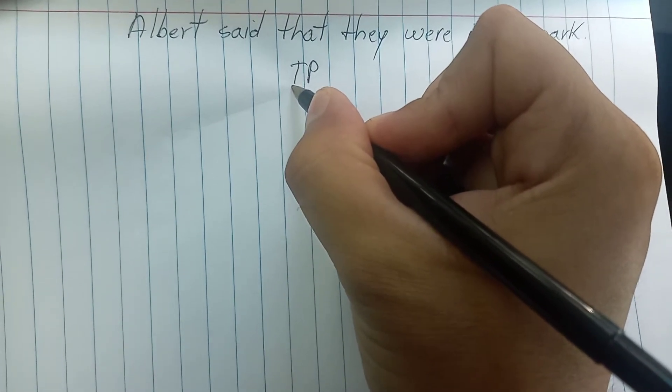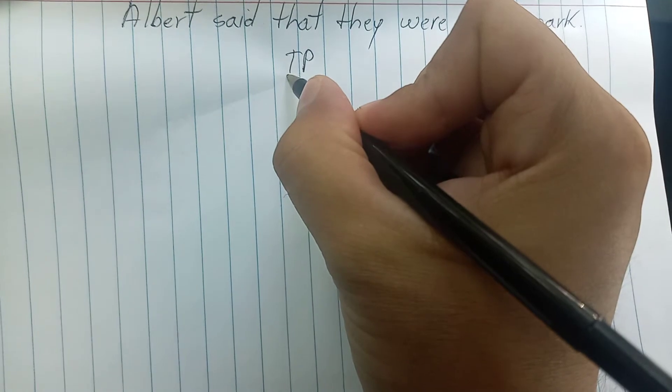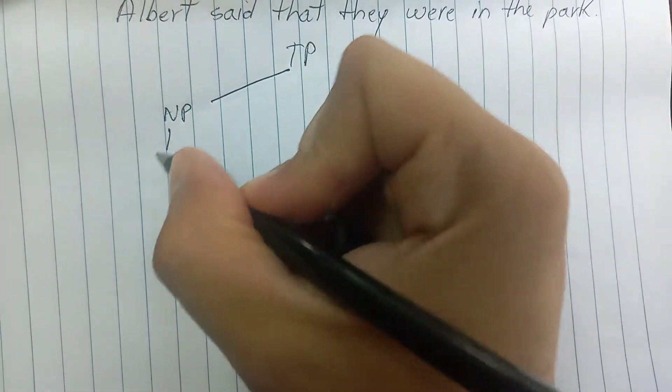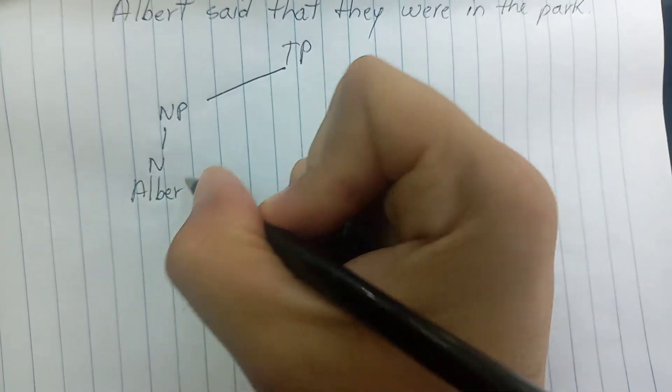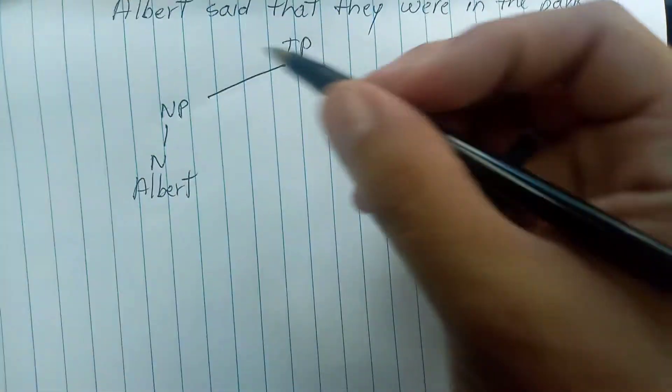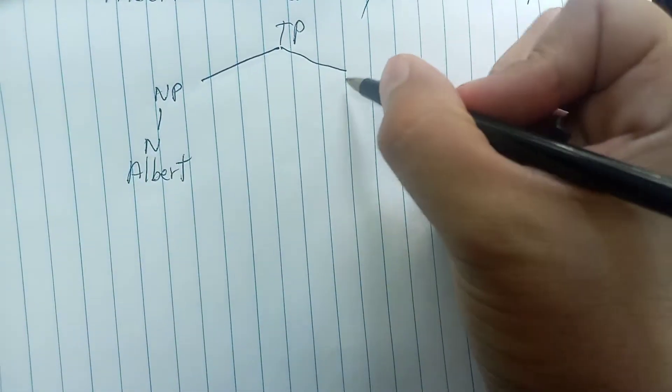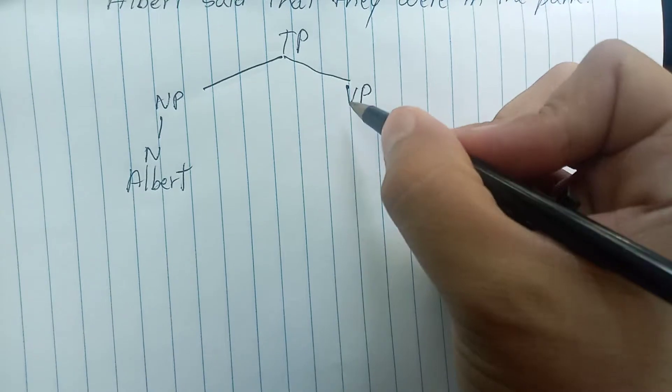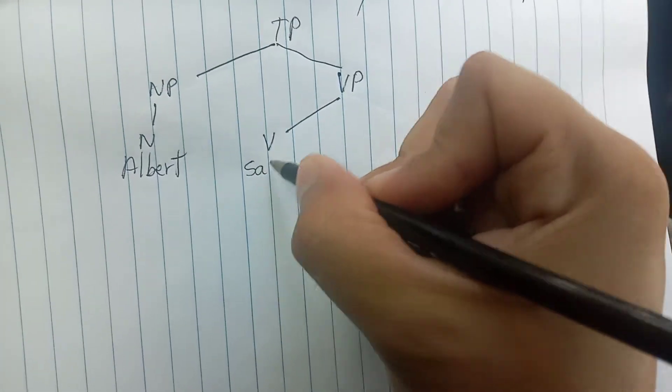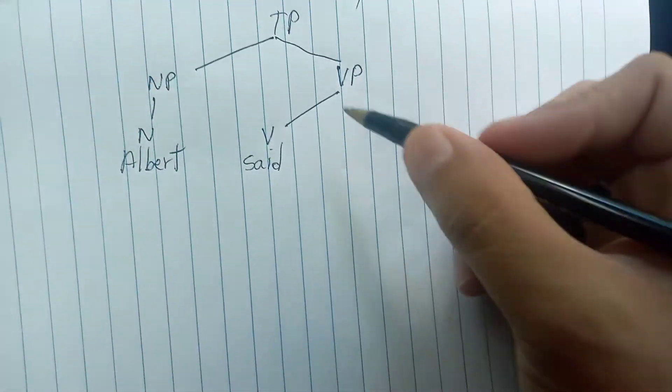This tense phrase is compounded by the noun phrase Albert. Then we have a verb phrase said that they were in the park, and the verb is said.